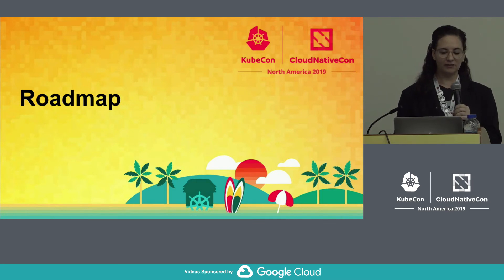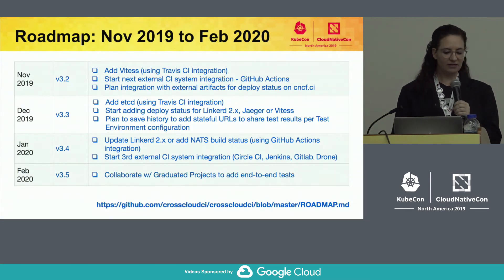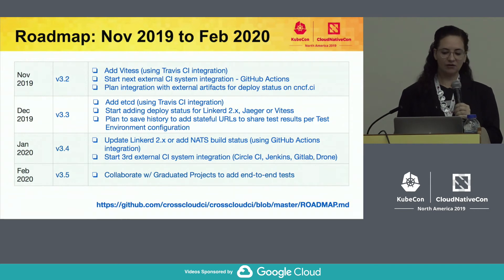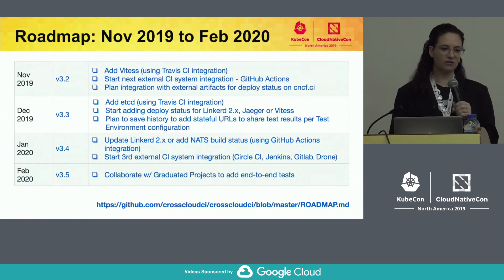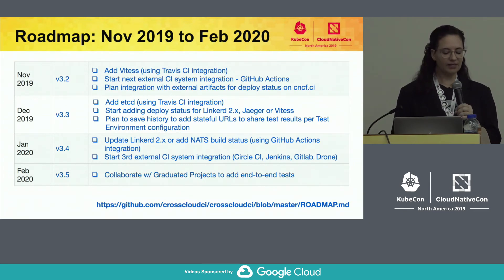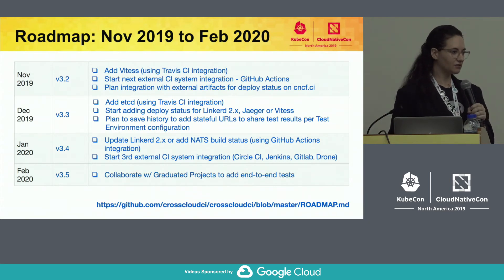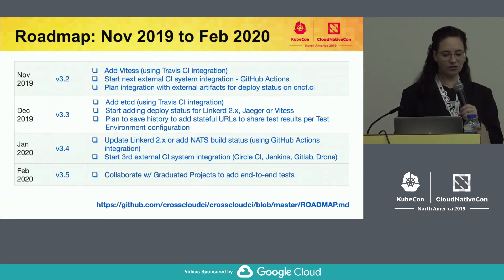That's an overview of where we've been, and here's what's next on our roadmap. We'll collaborate with Vitesse on adding their newly graduated project to CNCF-CI. We've started the external CI plugin for GitHub Actions to retrieve the build status for projects using GitHub Actions. We'll also resume efforts to use external build artifacts to populate the deploy column, and then start adding deploy for Linkerd2, Jaeger, or Vitesse. We'd like to support stateful URLs for sharing and tracking test results by day, and in order to do that, we'll need to start saving history. We'd like to collaborate with the projects on populating the end-to-end test column, which is all NA at this time. We'll add new projects using the GitHub Actions integration, and then start on the third and fourth integrations. If you have any ideas of what CI system you'd like to see next, please let us know.